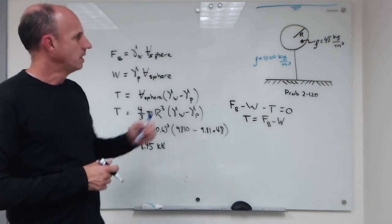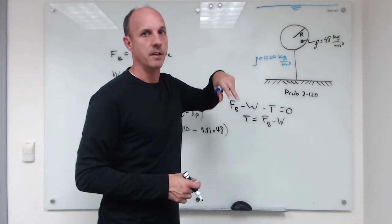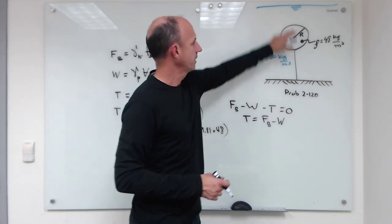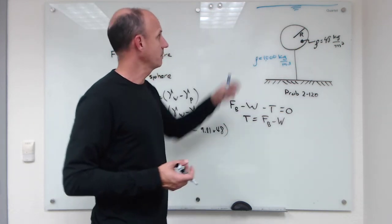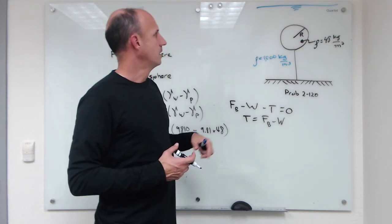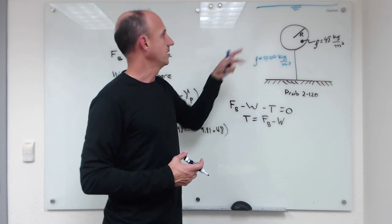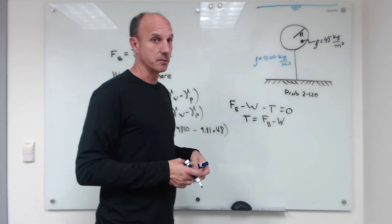Now notice here that it doesn't matter where below the surface this sphere is. It could be lower, it could be higher. The buoyant force is going to stay the same if the fluid density stays the same and this volume stays the same. So it doesn't matter how deep this thing is in the liquid; the buoyant force is going to be the same.